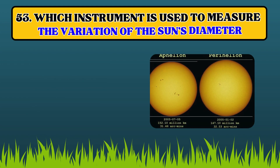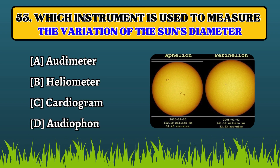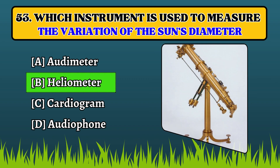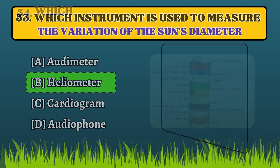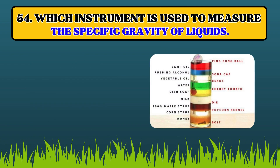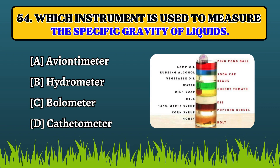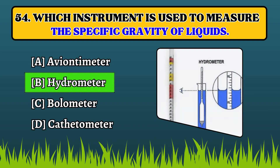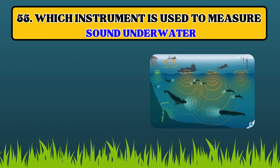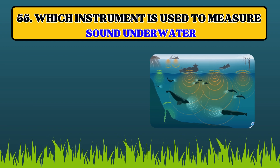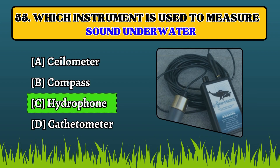Which instrument is used to measure the variation of the sun's diameter? Heliometer. Which instrument is used to measure the specific gravity of liquids? Hydrometer.